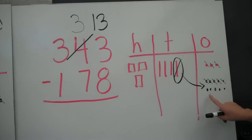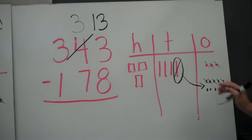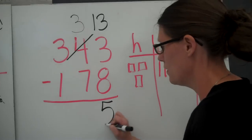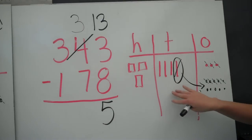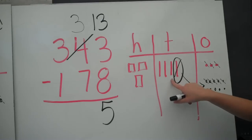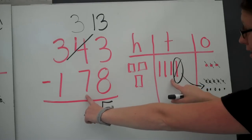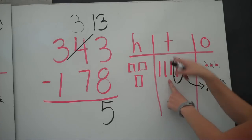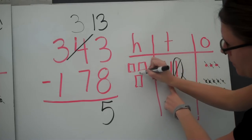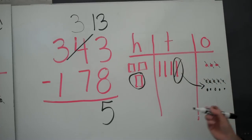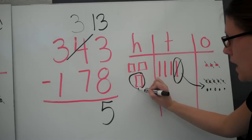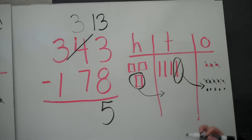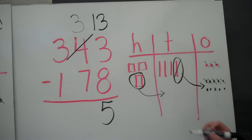I end up with 5. Now I'm going to go into my tens column. I see that I have 3, but I need to take away 7. I only have 3, I can't do that. So I'm going to go into the hundreds column and rename 100. Instead of saying 100, I'm going to say 10 tens. 100 equals 10 tens.